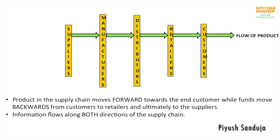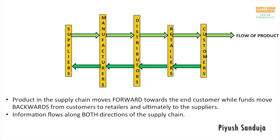For every flow of product there is a flow of funds in the opposite direction. When a customer purchases a product, he or she pays money to the retailer, as shown by the dark green arrow. Similarly, retailers pay to the distributors for replenishment as per their contractual timelines. Distributors pay to manufacturers, and manufacturers pay to their raw material suppliers. So the flow of funds is opposite in direction compared to the flow of product.